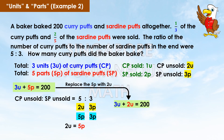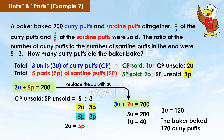Replace the 5p with 2u: 3u plus 2u equals 200, so 5u equals 200, giving 1u equals 40. Therefore, 3u equals 120. The baker baked 120 curry puffs.